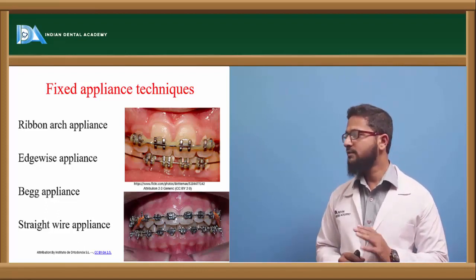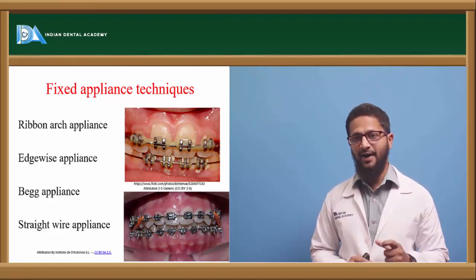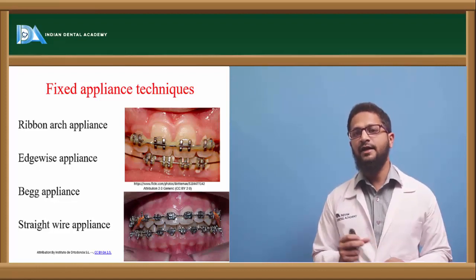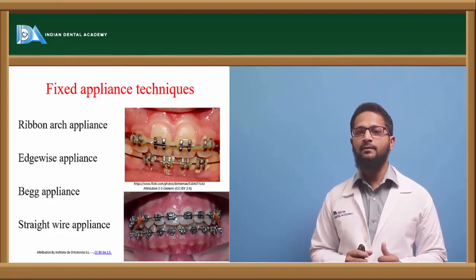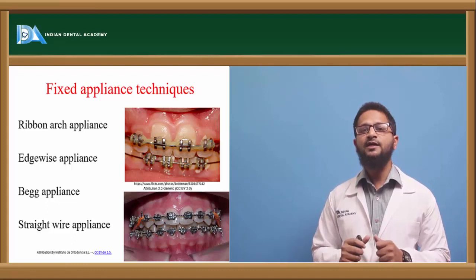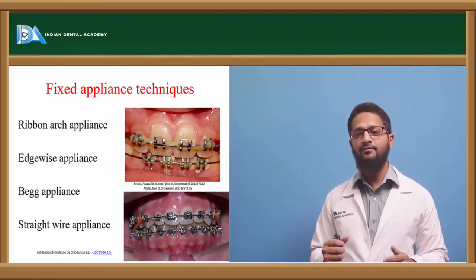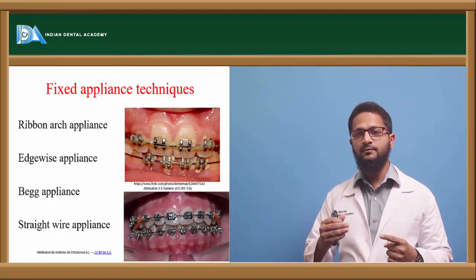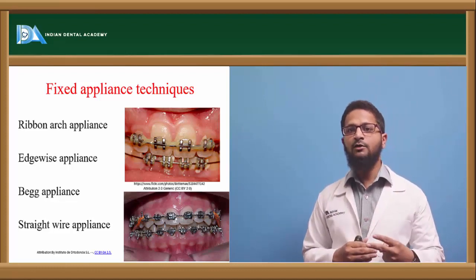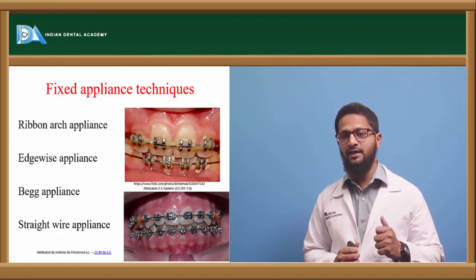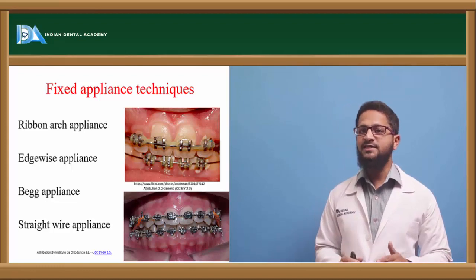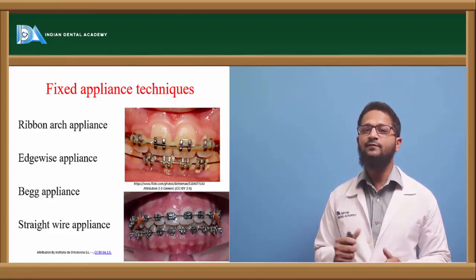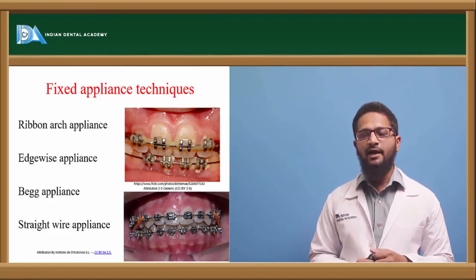The edgewise appliance was Angle's last contribution to orthodontics. Both edgewise and straight wire appliances have brackets with horizontal slots facing labially and a rectangular slot cross-section that accepts rectangular wires. The name 'edgewise' reflects that the bracket is not pre-programmed — everything must be done on the wire. Bends are incorporated into the wire to bring about tooth movements: first-order bends for labial-lingual movements, second-order bends for mesiodistal movements, and third-order bends for root movements and torque. Movement in all three planes of space is achievable with precise tooth movement, but the technique is complex as many bends must be placed in the wire.